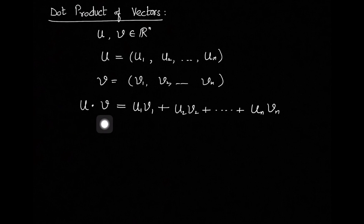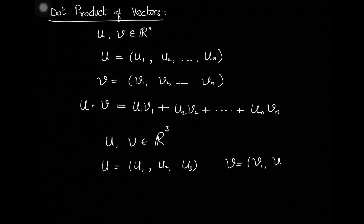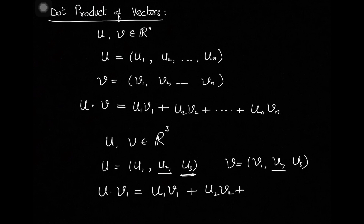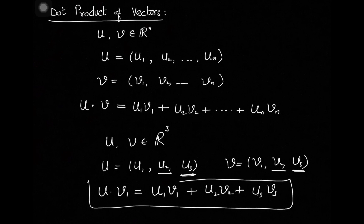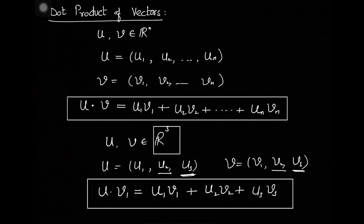So the dot product of two vectors gives a scalar number, denoted u·v. For vectors u and v in R3, each has three components: u1, u2, u3 and v1, v2, v3. The dot product is computed component-wise: u1·v1 + u2·v2 + u3·v3. This is also your general definition for Rn.